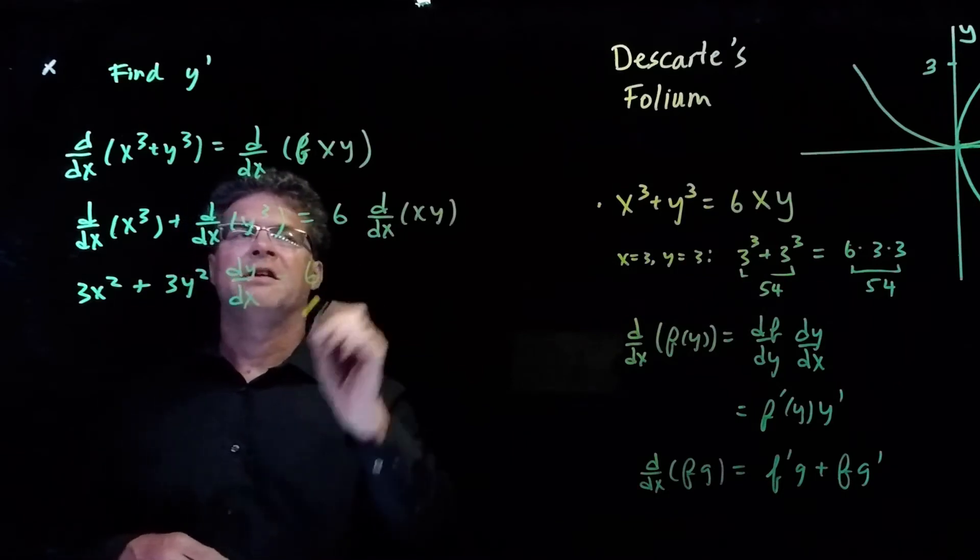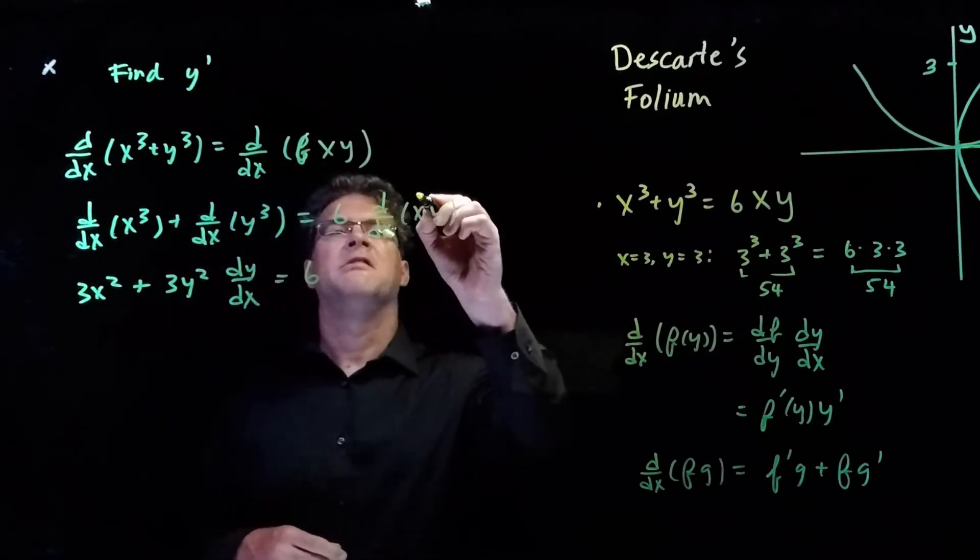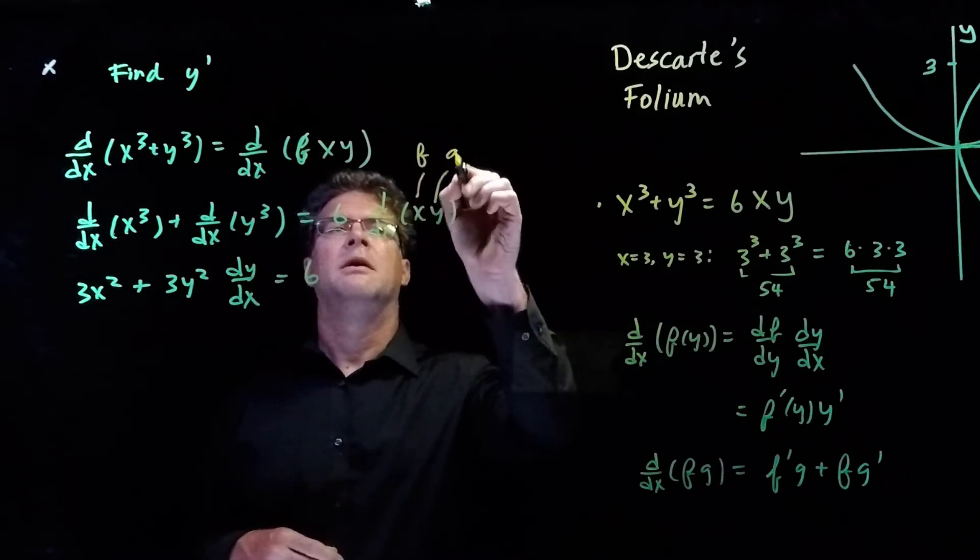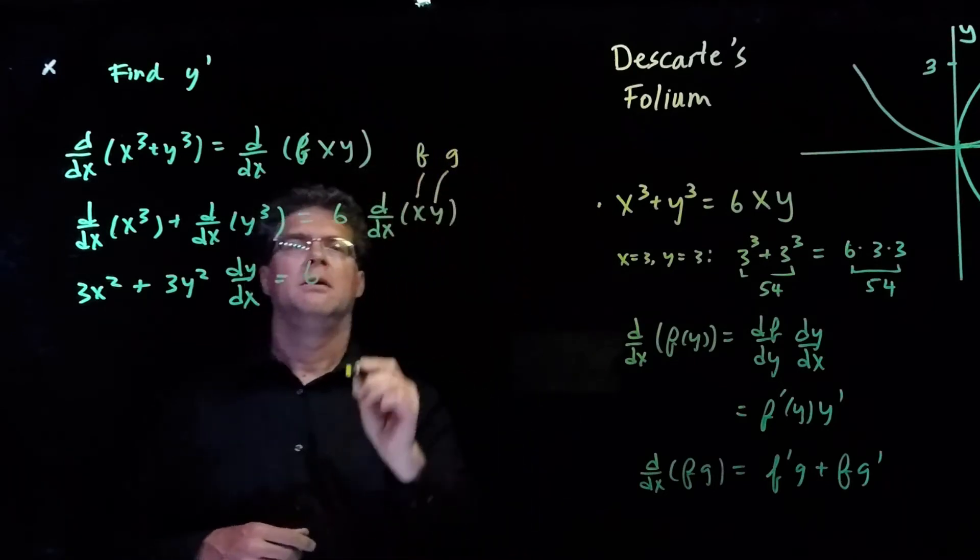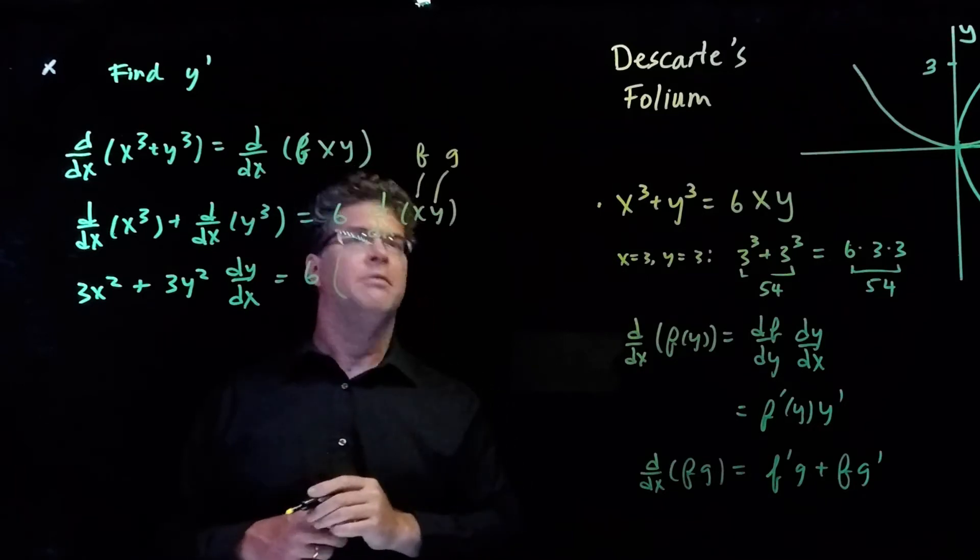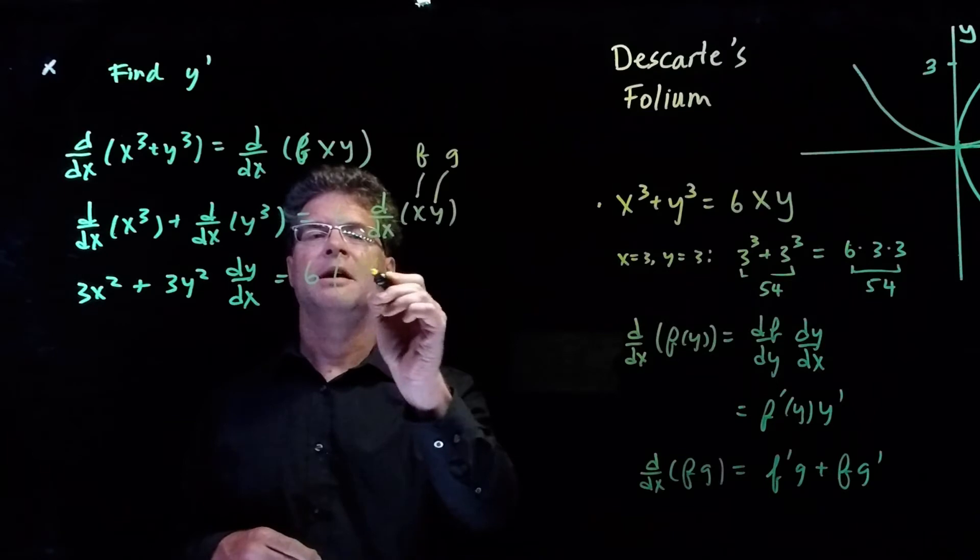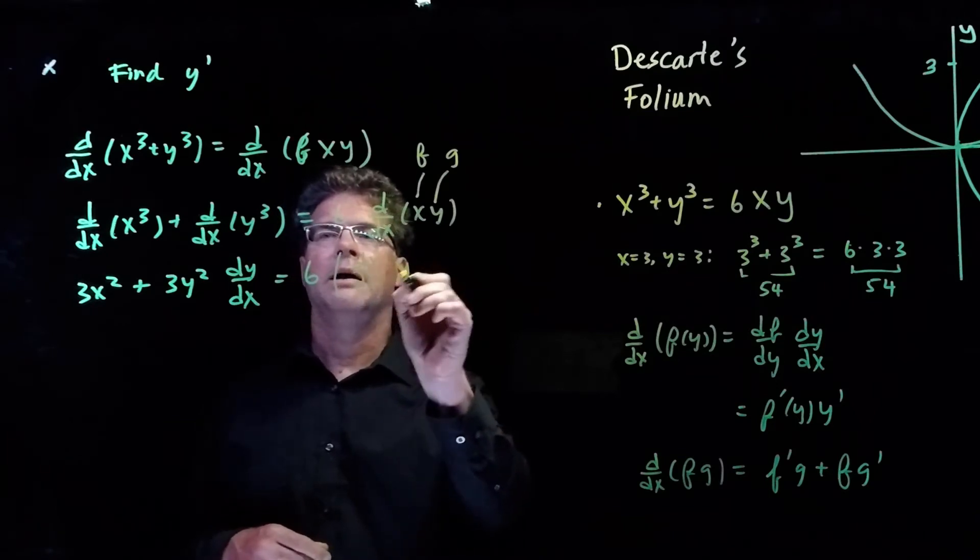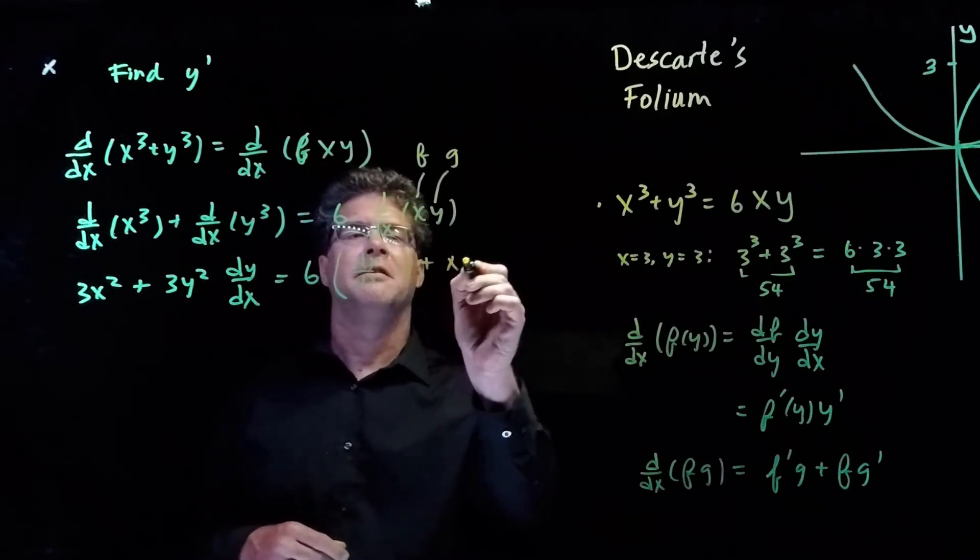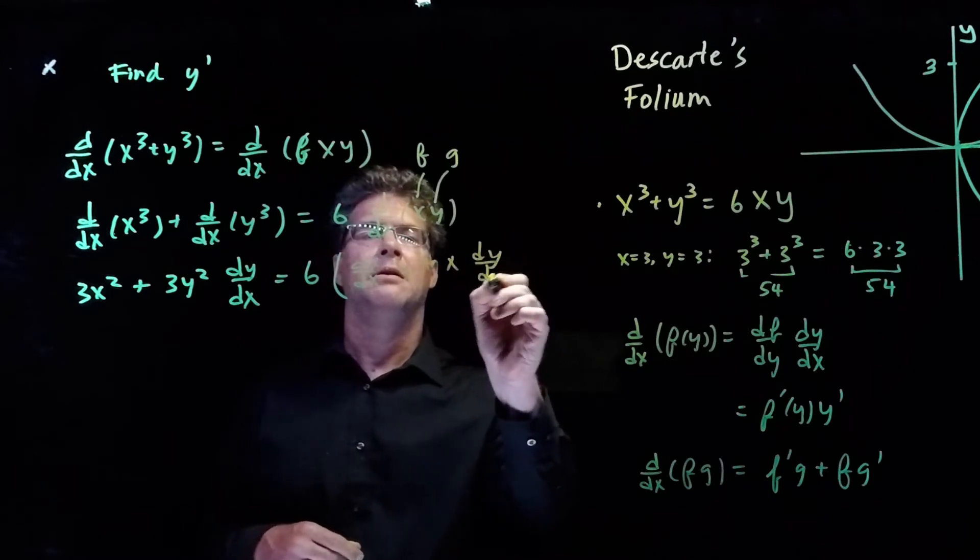And on the right-hand side, we're going to think about this as our f and this as our g. So we have f prime is dx/dx times y plus x times dy/dx.